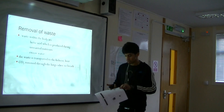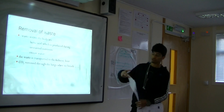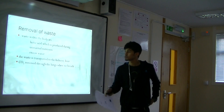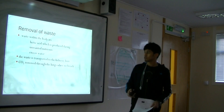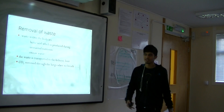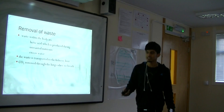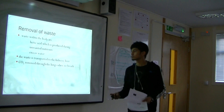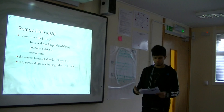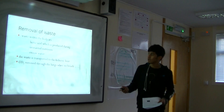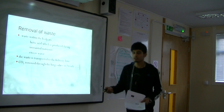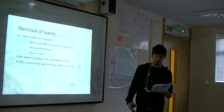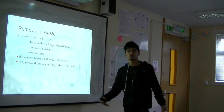Removal of waste: the body produces lots of waste such as unwanted nutrients and lactic acid, which is caused by oxygen debt during anaerobic exercise, as well as excess water. The waste is transported to the liver or kidneys. The kidneys filter the blood and keep it clean, whilst the liver removes toxins such as lactic acid. Another waste product is CO2, which is removed through breathing. Lactic acid is produced towards the end of a 100m sprint, causing a burning sensation in the legs.